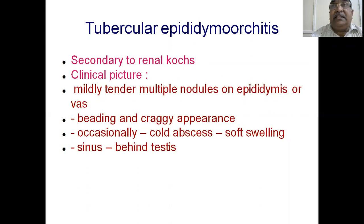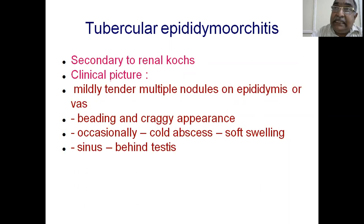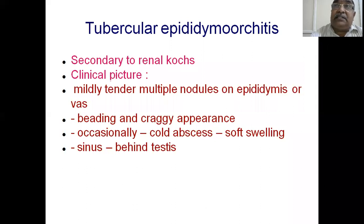Rarely, when the testis is congenitally inverted or reversed, the epididymis is anteriorly placed and a sinus may appear anteriorly. Previously, when syphilitic disease was common, syphilitic orchitis producing a gumma could form an anterior sinus. The old dictum was: an anterior sinus of the scrotum is syphilitic, a posterior sinus is tuberculous. This distinction is largely obsolete now, as syphilitic disease is quite rare.